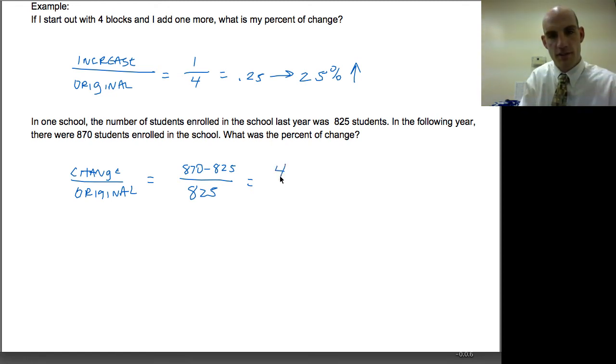The 45 students is in relationship to that 825. When I calculate that as a decimal, I get 0.055 rounded, which as a percent would be 5.5 percent.